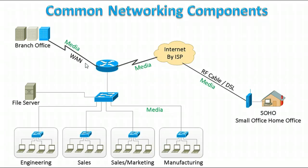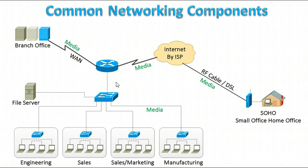The router is connected to two or more data lines — in this case, three. When data packets come in on one line, the router reads the address information inside the packet to determine the destination, then uses the routing table stored in the router along with routing policy to direct the traffic out the appropriate interface.